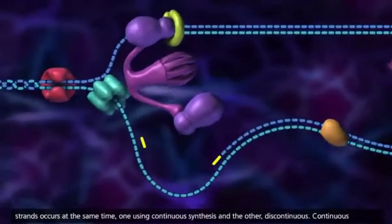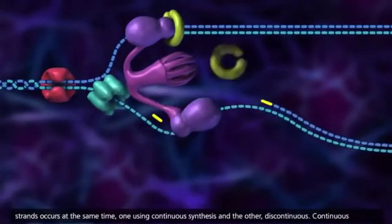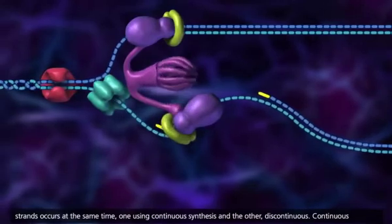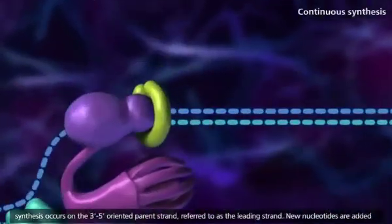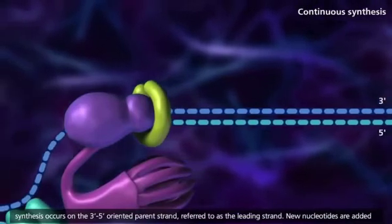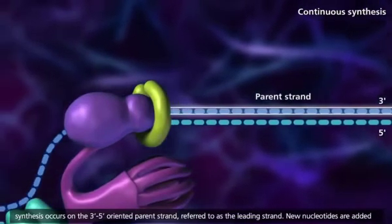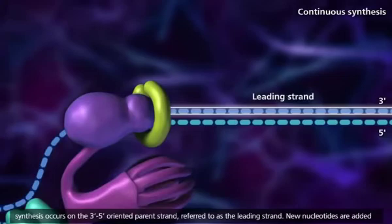Replication of both strands occurs at the same time, one using continuous synthesis and the other discontinuous. Continuous synthesis occurs on the 3' to 5' oriented parent strand, referred to as the leading strand.